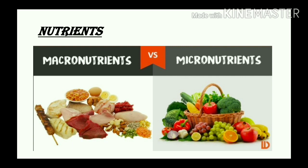These nutrients can be classified into two types: macronutrients and micronutrients. Nutrients like carbohydrates, proteins, and fats are required in large quantities — these are called macronutrients. Macronutrients are those nutrients required in large amounts that provide the energy needed to maintain body functions and carry out activities of daily life.